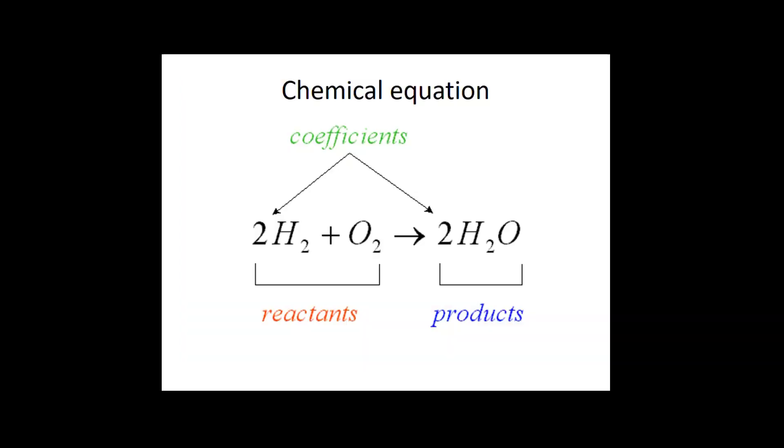This is a chemical equation: 2H2 plus O2 yields water, 2H2O. Here, hydrogen and oxygen are the reactants.